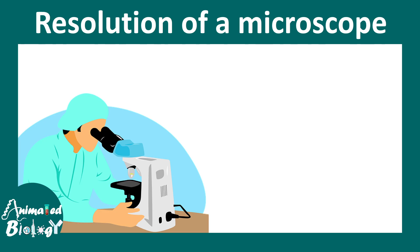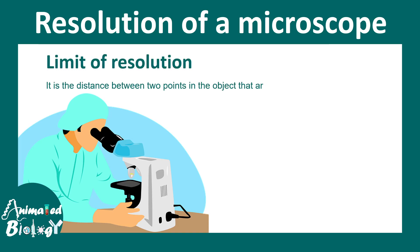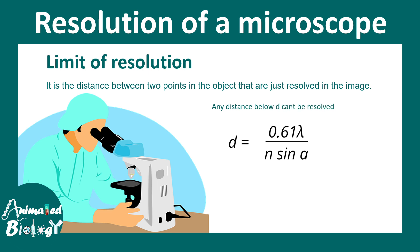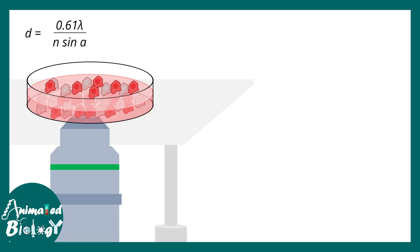The resolving power of the microscope is defined by a formula known as the limit of resolution. The limit of resolution is the distance between two point objects that are just resolved in an image, and it is given by: d = 0.61λ / (n sin α). Any distance below this d cannot be resolved, so the smaller the d, the better it is for a microscope.